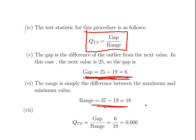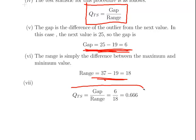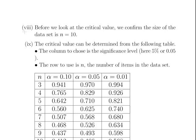The range is simply the range. So it is 6 divided by 18 — a straightforward enough calculation. The test statistic is the gap divided by the range. 6 divided by 18 is 0.333, one third essentially.